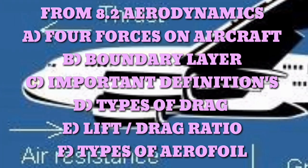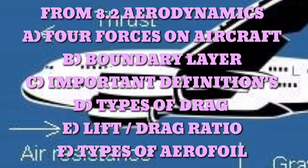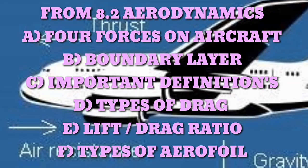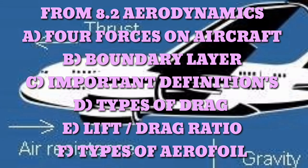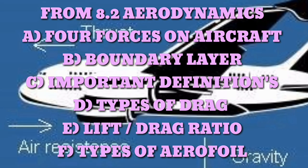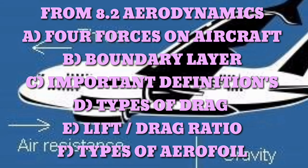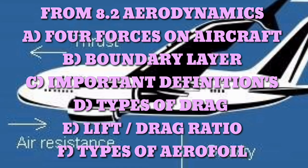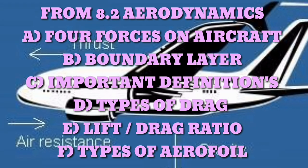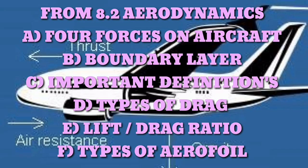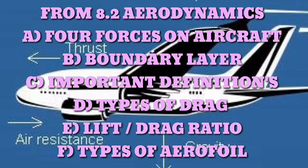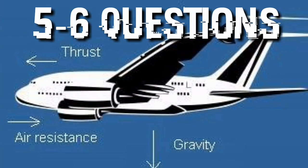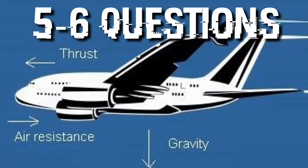Topic 8.2 is aerodynamics, which includes complete term definitions and concepts. The main topics to study are the four forces acting on an aircraft, boundary layer terms such as aerodynamic center, center of pressure, aspect ratio, angle of attack, fineness ratio, the types of drag and drag coefficient, L/D ratio, vortex dissipator, and types of aerofoil including flaps and slats. DGCA can ask up to five to six questions from this topic.